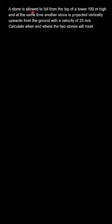Hi, the question says: A stone is allowed to fall from the top of a tower 100 meters high and at the same time another stone is projected vertically upwards from the ground with a velocity of 25 meters per second. Calculate when and where the two stones will meet.